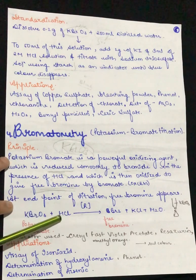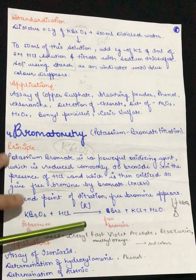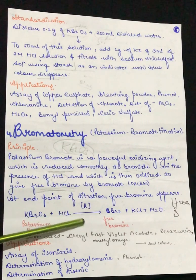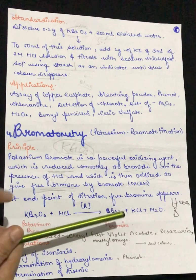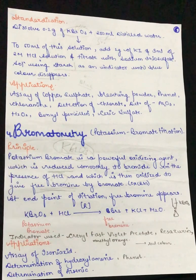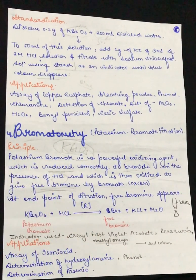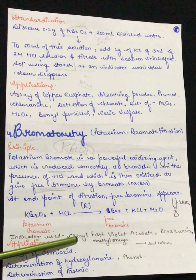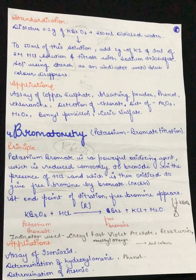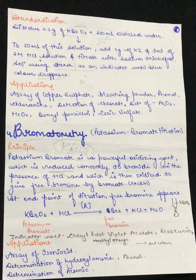When potassium bromate reacts with HCl, it is reduced and further oxidized to give free bromine, with KCl and H2O as end products. The indicator most commonly used is methyl orange; other indicators include crystal fast violet and resazurin. At the endpoint, a red color is observed.